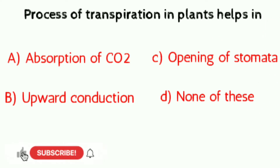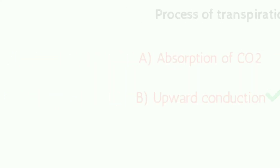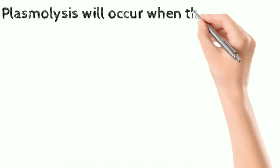Correct answer is upward conduction. Question number two: plasmolysis will occur when the cell is placed in — a) an acidic solution, b) isotonic solution, c) hypertonic solution, d) hypertonic solution.